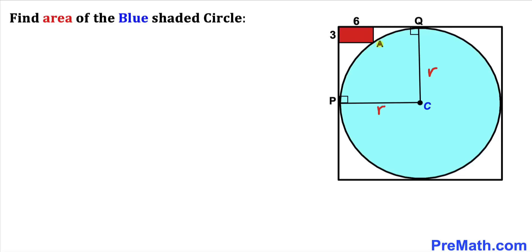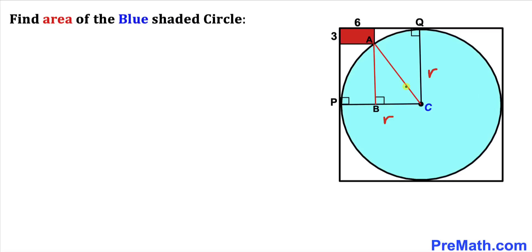Next, let's connect points A and center C. Now let's drop a perpendicular from point A onto the radius, giving us right triangle ABC. Both angles are 90 degrees, forming a rectangle, which means this side length equals PB. Since one side length is 6 units, this side is also 6 units. Since the whole length is radius r, this segment has length r minus 6.